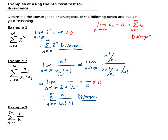Let's look at example three. We have the summation of 1 over n, where n is going from 1 to infinity. If we take the limit as n approaches infinity of 1 over n, this gives us 0. But remember, we can't make any conclusion here. Just because the limit of the nth term goes to 0 doesn't tell us anything about what the series is doing. At this point, all we know is the series could be converging or diverging — there is no conclusion.